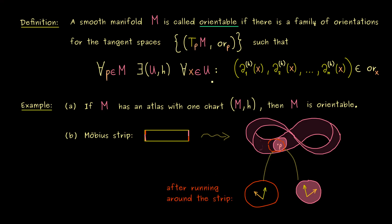So please recall here, we don't want to change the orientation while running on the strip. So this is not a problem, the problem only occurs if we come back to our original P, and we have a different orientation than before. And this is exactly what happens,